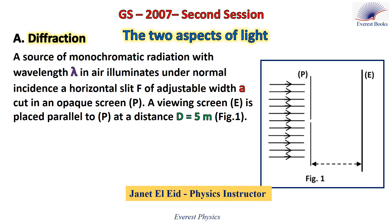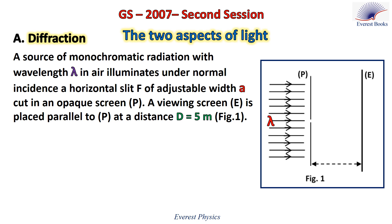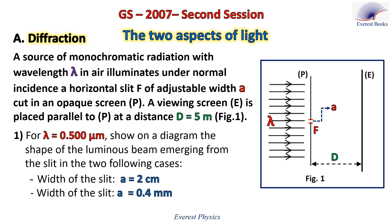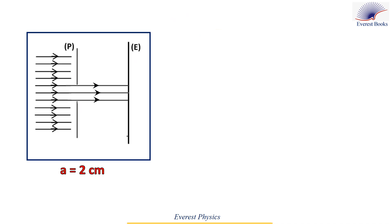This exercise is about the two aspects of light. Let's start with the phenomenon of diffraction. A source of monochromatic radiation with wavelength lambda in air illuminates under normal incidence a horizontal slit F of adjustable width a, cut in an opaque screen P. A viewing screen E is placed parallel to P at a distance d equal to 5 meters. For lambda equal to 0.5 micrometers, show on a diagram the shape of the luminous beam emerging from the slit in two cases: first, the width of the slit is 2 centimeters, and second, the width is 0.4 millimeters.